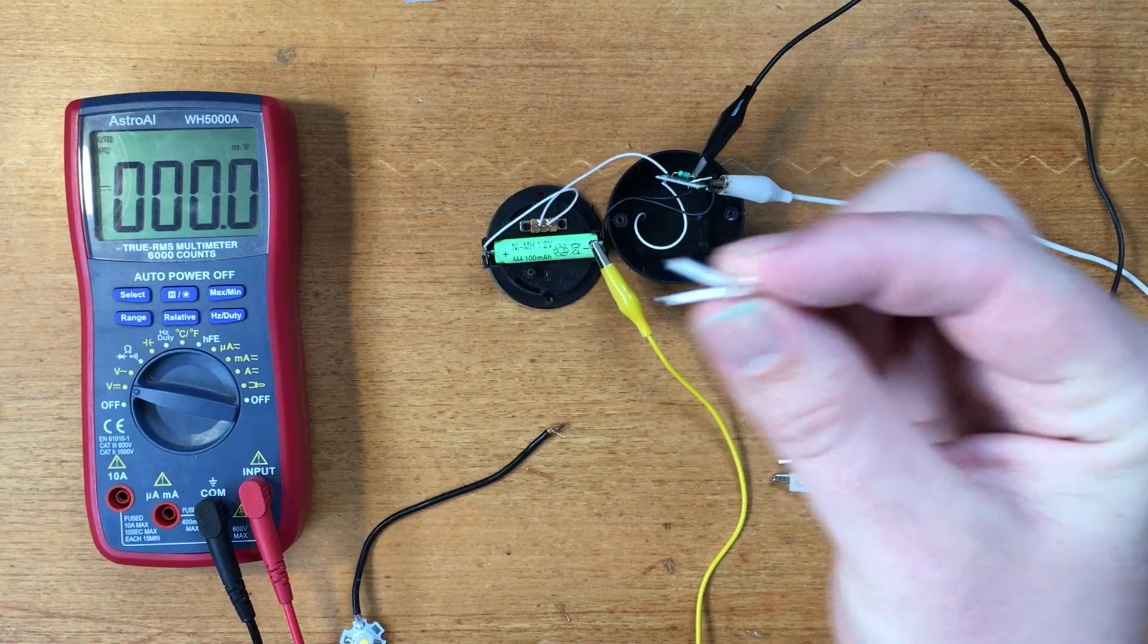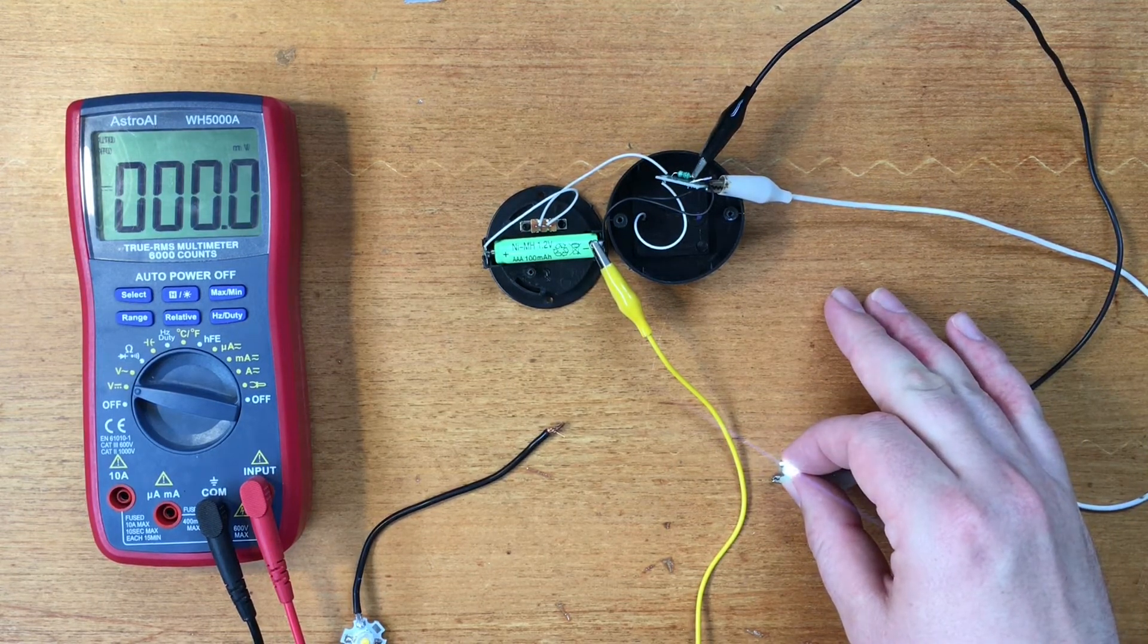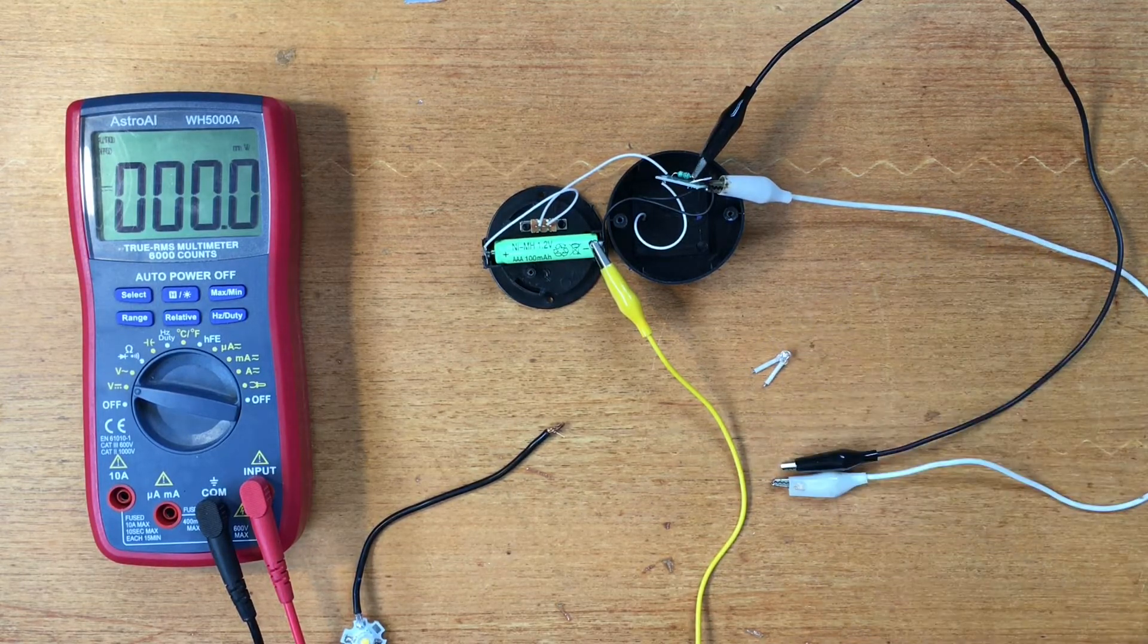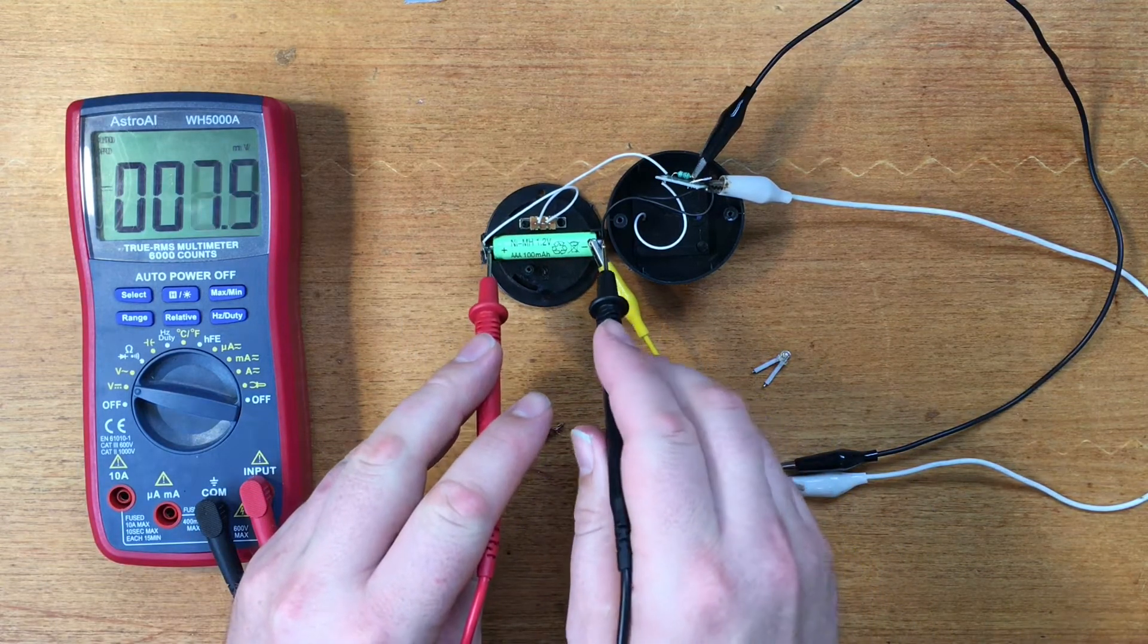I've removed the LED now and hooked up some wires so I can test it. If I place that on there, it brings me back to where the LED was before. If we check the voltage on the battery here, should get around 1.2.